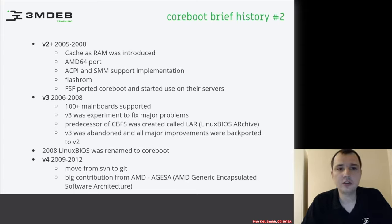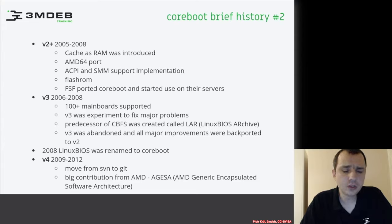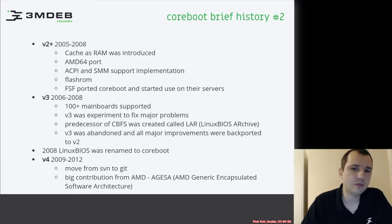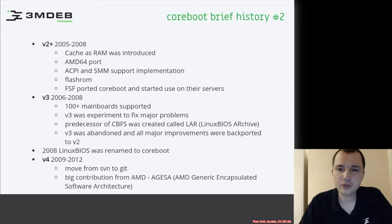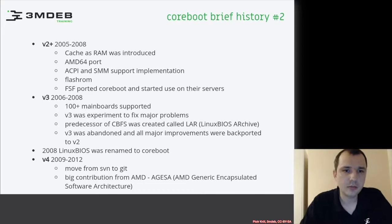The Free Software Foundation was interested in Coreboot and started to use Linux BIOS and Coreboot on their own servers. In version 3, from 2006 to 2008, there were more than 100 mainboards supported. But version 3 was kind of an experiment where some things were tried, for example CBFS. It was like a wrong path of evolution, or a path that gave some ideas which were moved forward, but the V3 branch was killed. They got back to V2 and ported the most important improvements to V2, then progressed to V4.